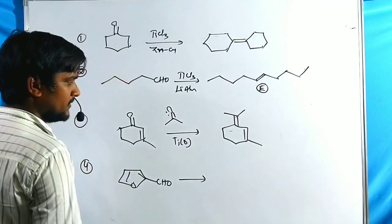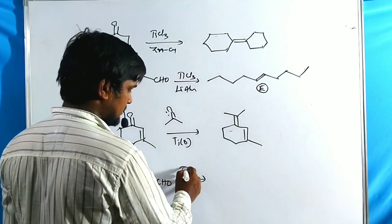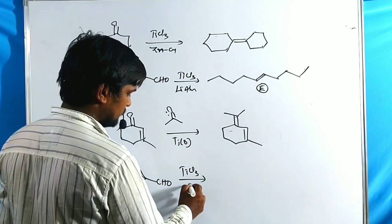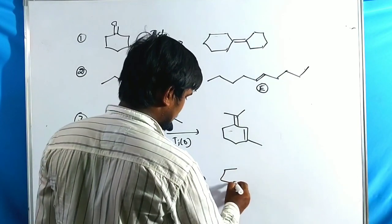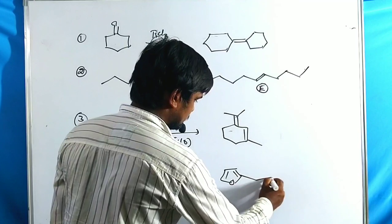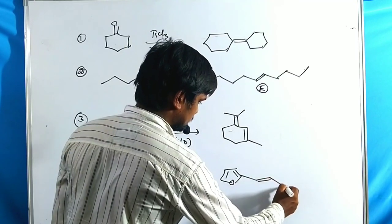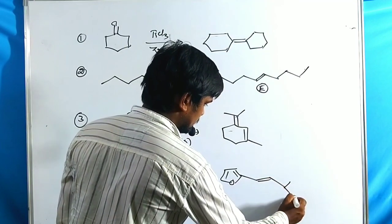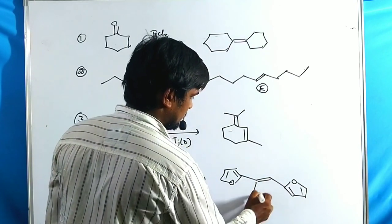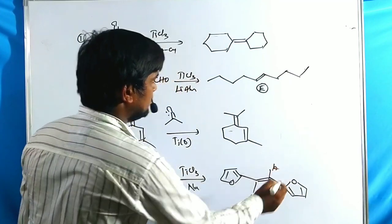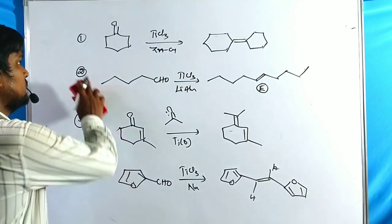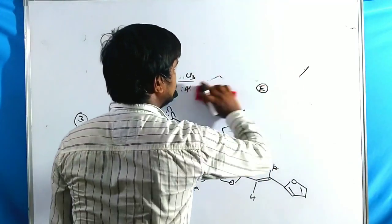Another example: an aldehyde treated with TiCl₃ and sodium or potassium metal gives the corresponding olefin product. These are four examples of McMurray Coupling reactions.